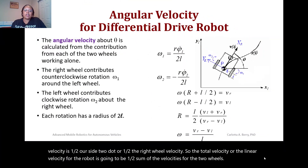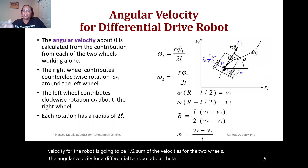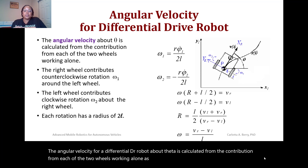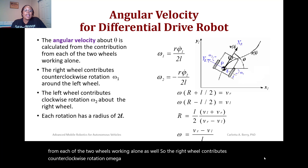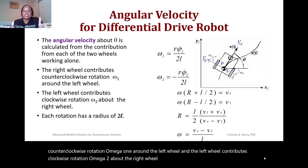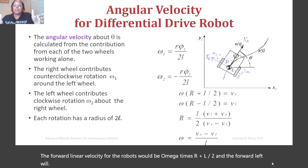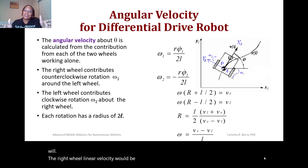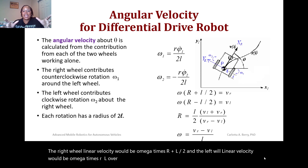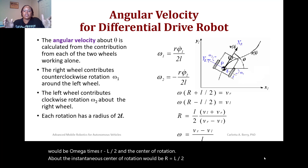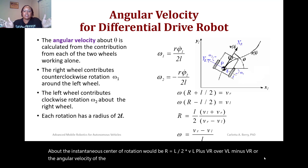The angular velocity for a differential drive robot about theta is calculated from the contribution of each wheel. The right wheel contributes counterclockwise rotation omega_1 around the left wheel, and the left wheel contributes clockwise rotation omega_2 about the right wheel, each with radius 2L. So omega_1 = R*psi_1_dot / 2L and omega_2 = R*psi_2_dot / 2L. The right wheel linear velocity is omega*(R + L/2) and the left wheel is omega*(R - L/2). The radius of the instantaneous center of rotation is R = (L/2) * (VL + VR) / (VL - VR), and the angular velocity of the robot is omega = (VR - VL) / L.